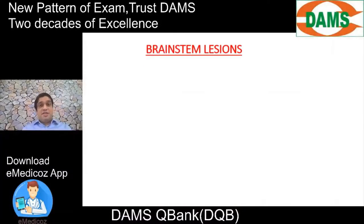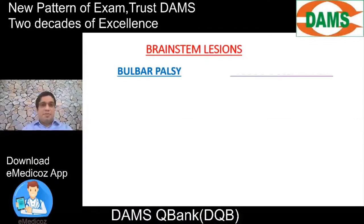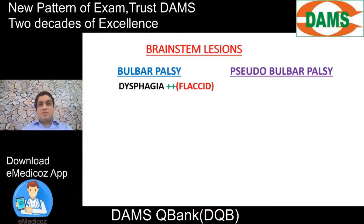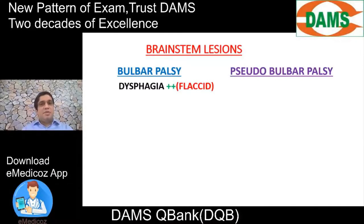The brainstem lesion can be of two types. A lesion in the medulla causes bulbar palsy; a lesion above the medulla involving the corticobulbar tract causes pseudobulbar palsy. In bulbar palsy, the 10th cranial nerve nucleus is not working, causing difficulty in swallowing — dysphagia. The lesion in the medulla is a nuclear lesion; nuclear lesions are LMN, and in LMN we find flaccid weakness, so this is a flaccid dysphagia.